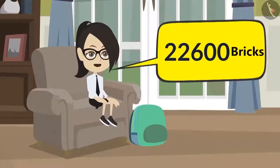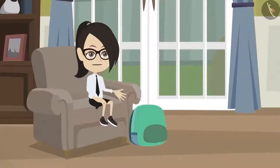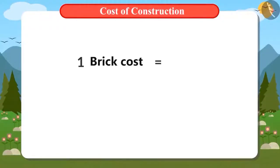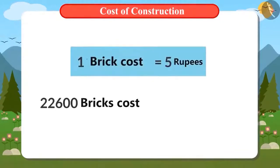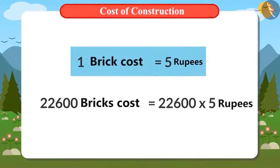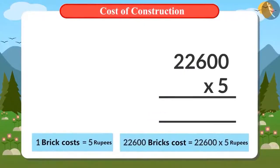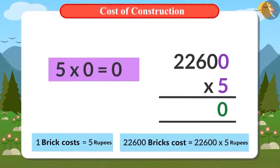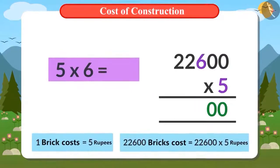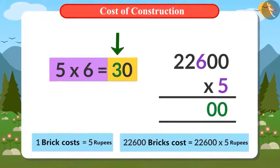Now we know that a total of 22,600 bricks will be used. First let's find how much they would cost us. A brick costs 5 rupees. So to find the value of 22,600 bricks, we will multiply 22,600 by 5. First we write 22,600 and 5 to multiply them. Now 5 will be multiplied by 0, the answer is 0. Now let's multiply 5 again with 0, the answer is 0. Now we will multiply 5 by 6, the answer is 30.